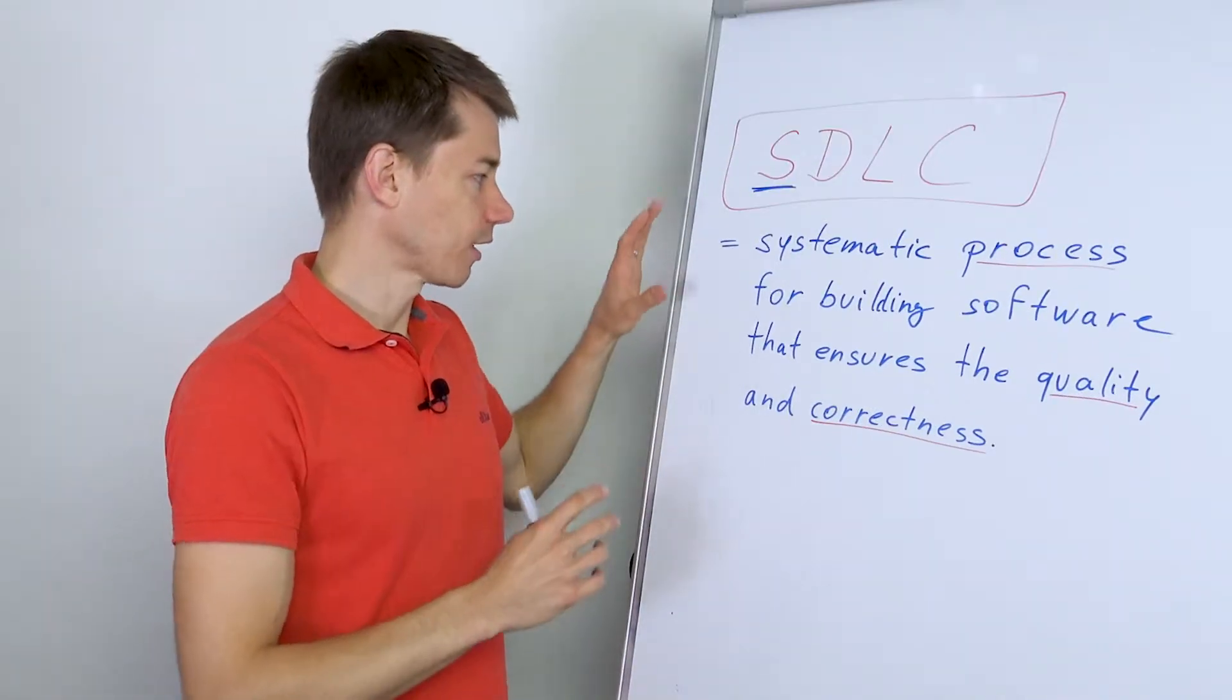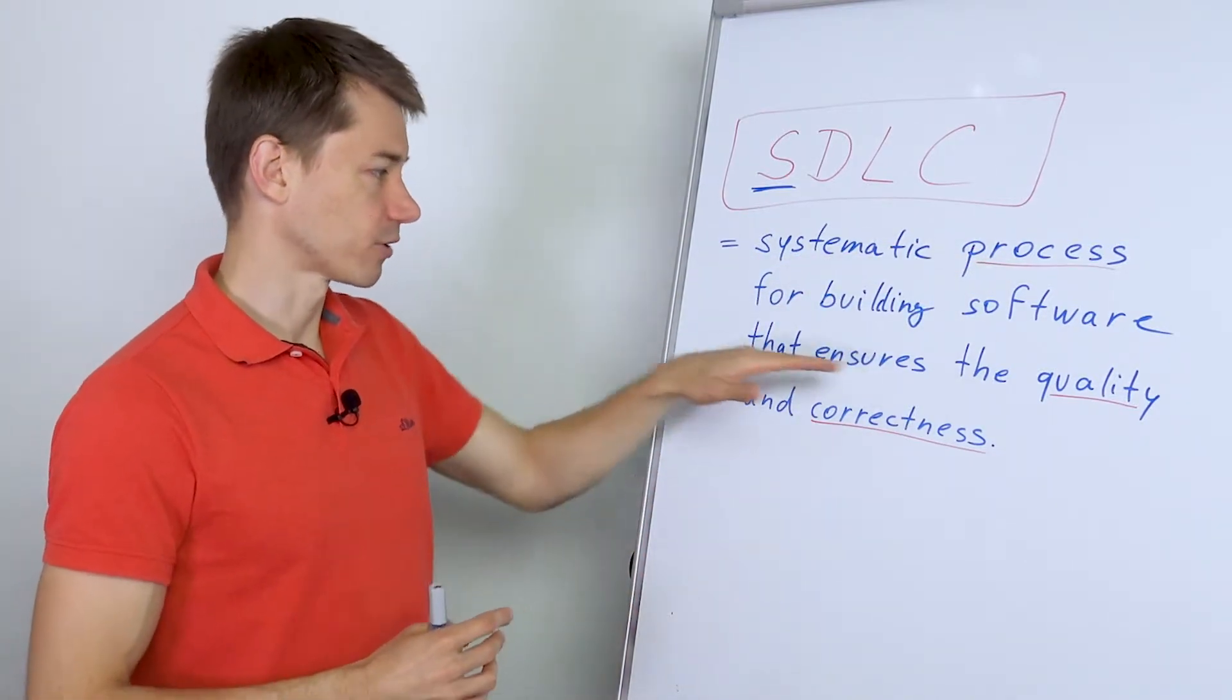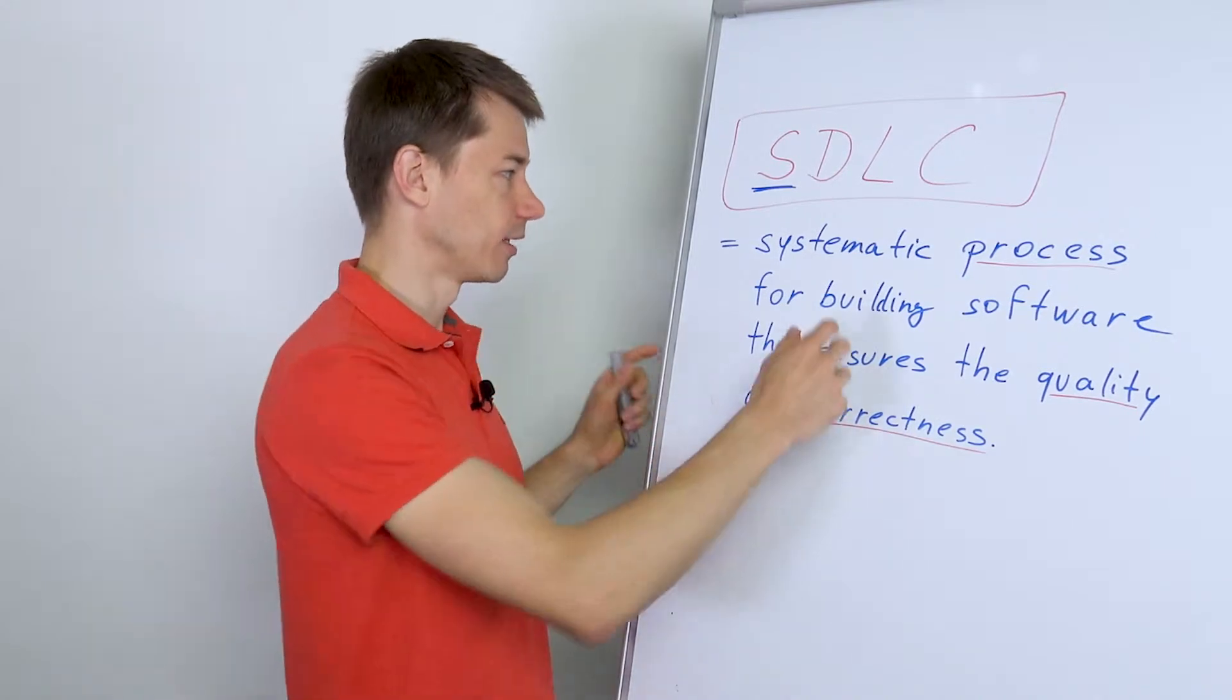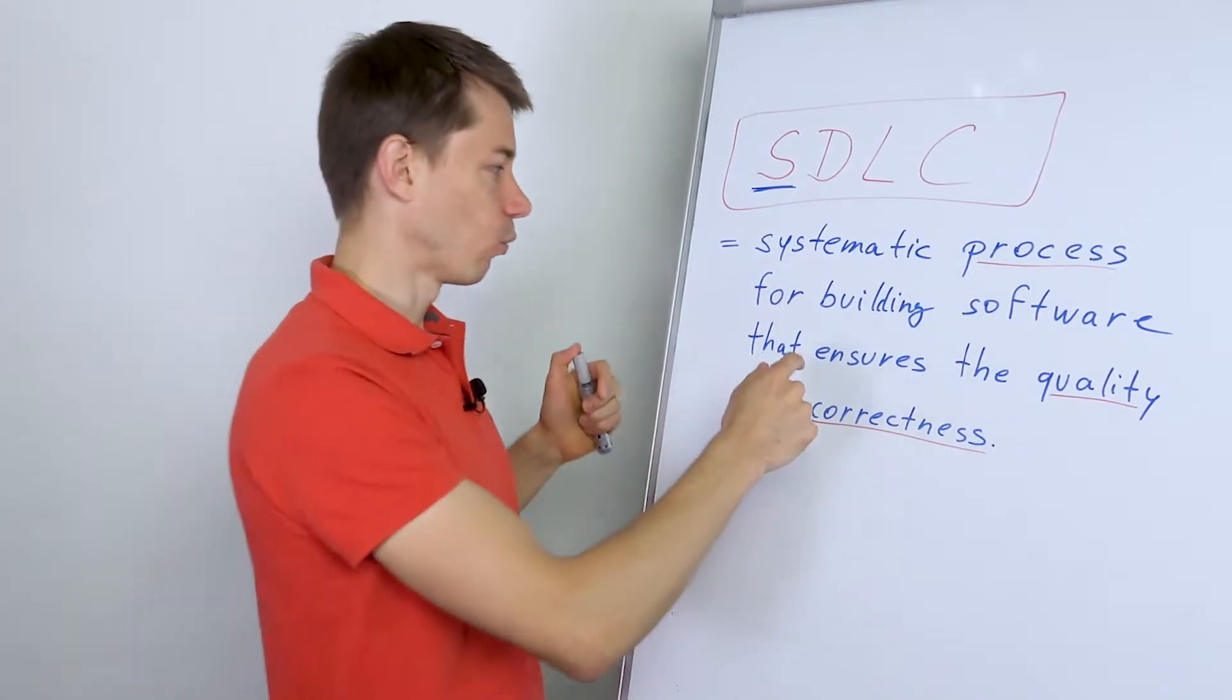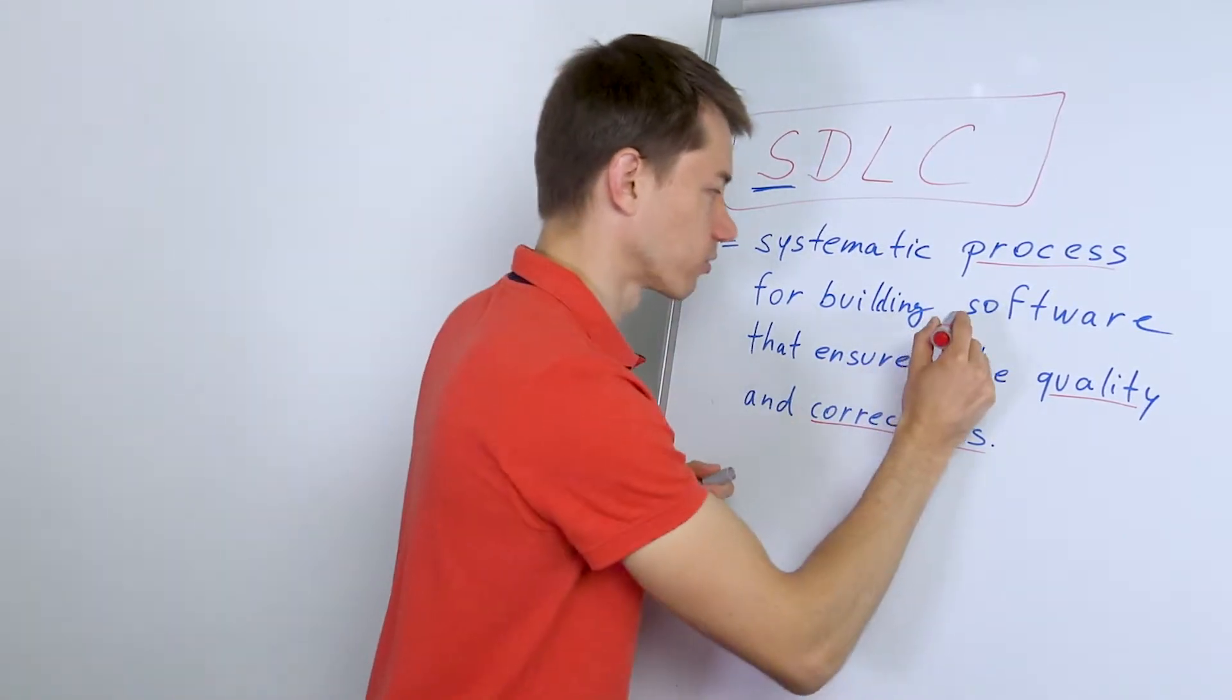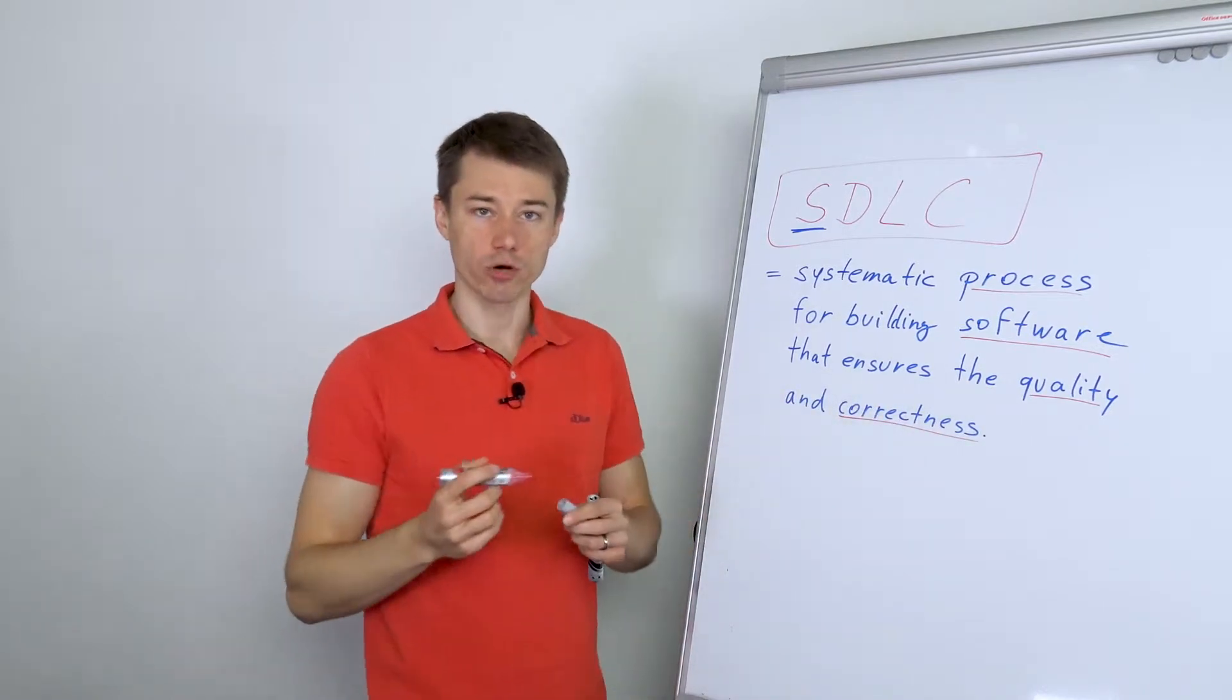So what it is - it's a systematic process for building software that ensures the quality and correctness of what we are trying to build. Let's repeat it again. It's a process - something that has a start and an end for building software that ensures the quality and correctness of what we're trying to build.